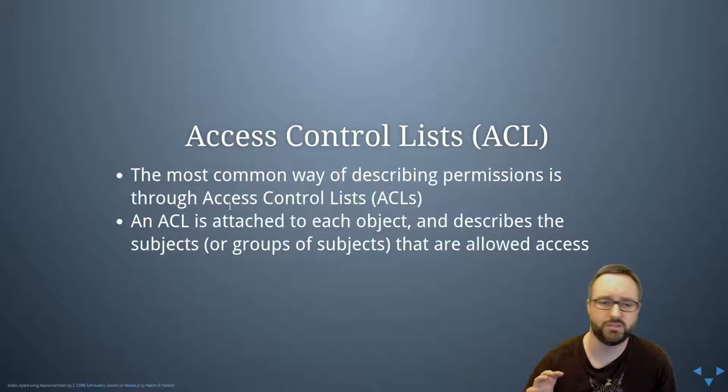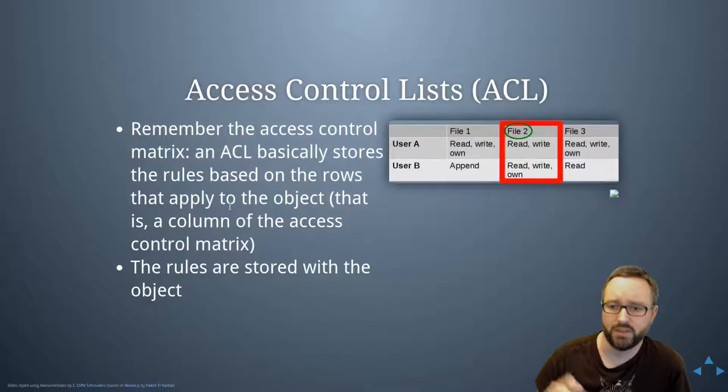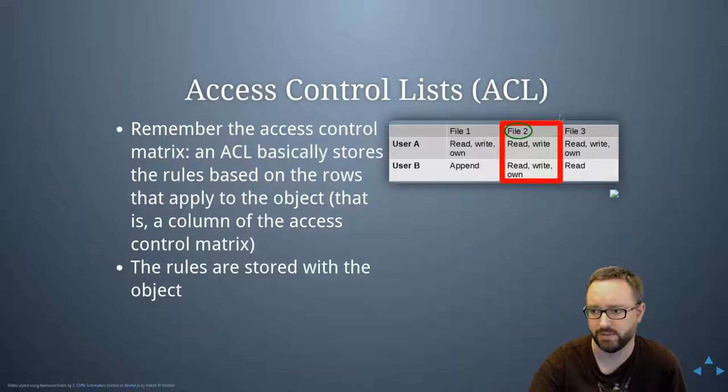What you do with an ACL is you actually attach the information about what's allowed to the objects in the system. Basically each file has some metadata attached to it that says who's allowed to do what to that file. We store the security information on the file itself or attached to the file. That information would include the users but also groups or other abstractions. If you remember the access control matrix, an ACL is essentially storing a column of that information attached to the file.